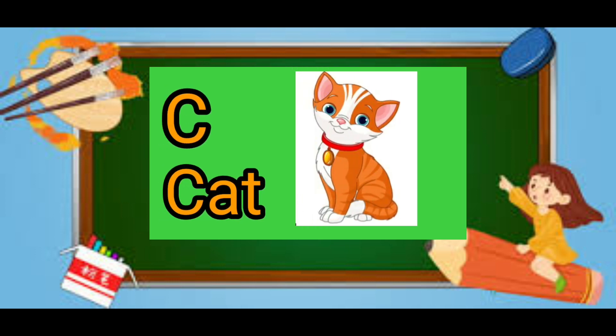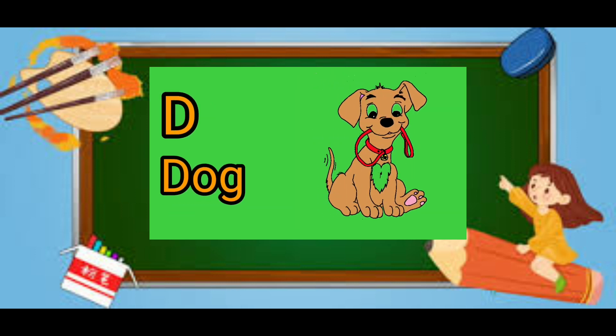C for cat, cat means billy. D for dog, dog means kutta.